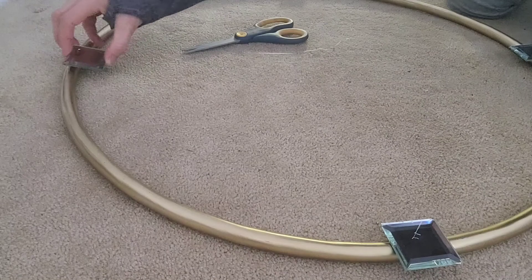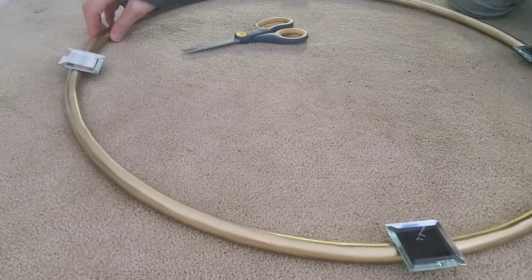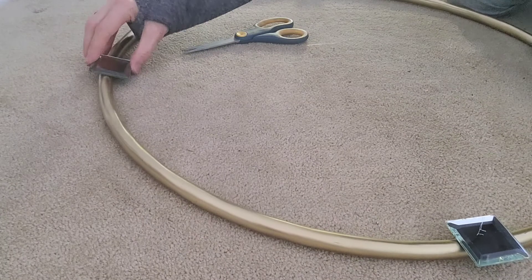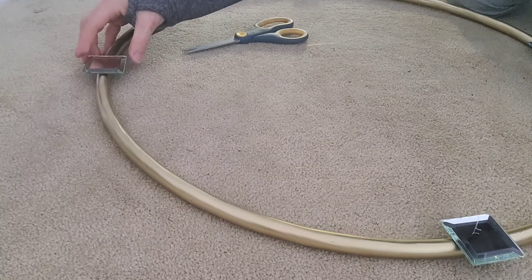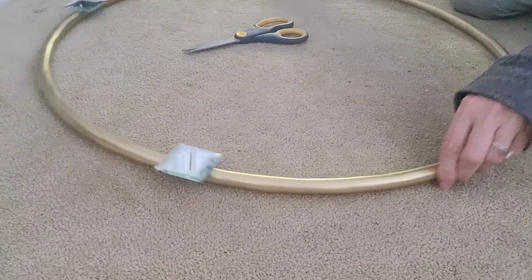I'm simply hot gluing them on. If you want something more permanent, of course use strong glue. I just made sure that they were sitting level on the hula hoop and honestly I'm just using my eye to balance the four points out.